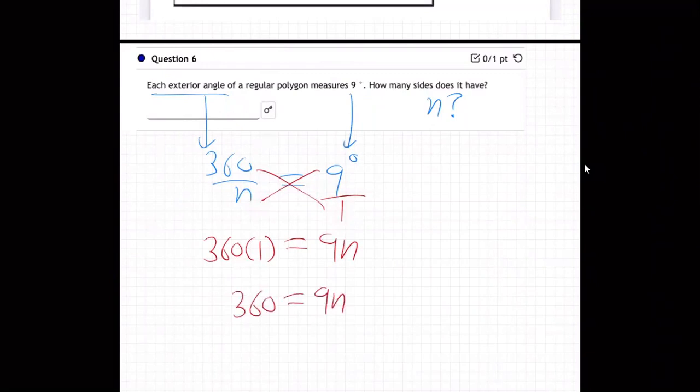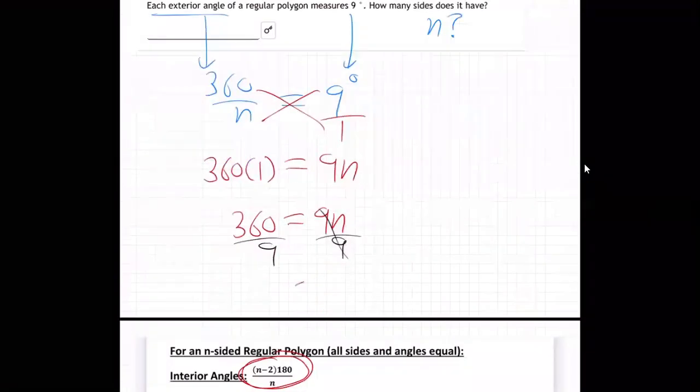Last step to get n alone, divide by nine. So boom, n is 40.